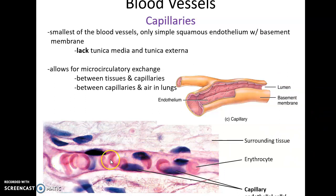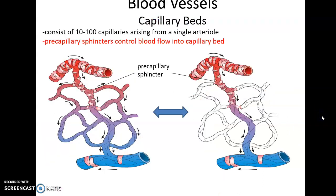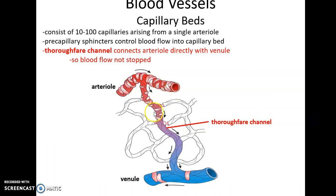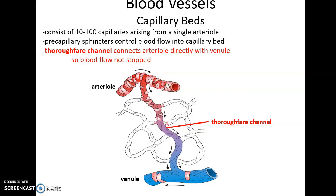As you can see in this picture, red blood cells are about the same size as the capillaries — they just barely fit in there. There are many capillary beds in our body, each containing somewhere between 10 to 100 or so capillaries. Pre-capillary sphincters control blood flow through those capillaries. However, there's also a thoroughfare channel — so even if blood flow is cut off to the capillary bed, blood will still flow from the arterioles straight into the venules, ensuring blood continues to flow and return to the heart.